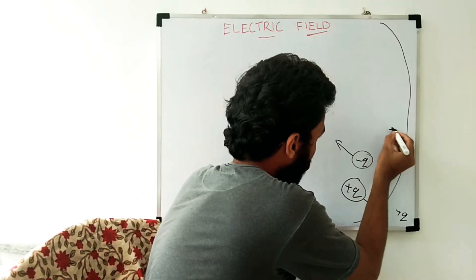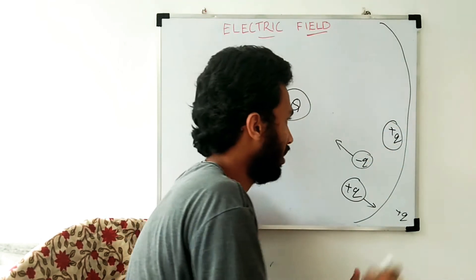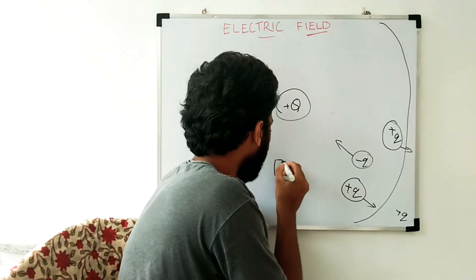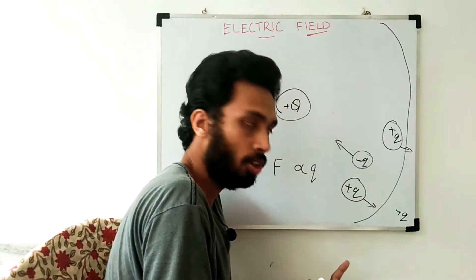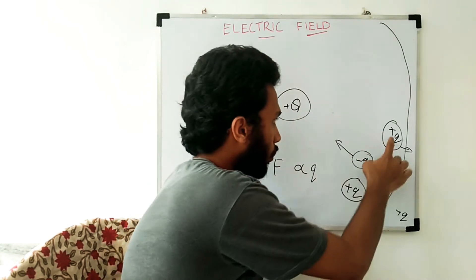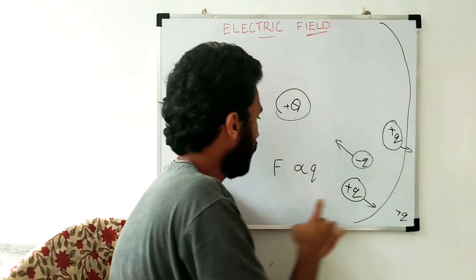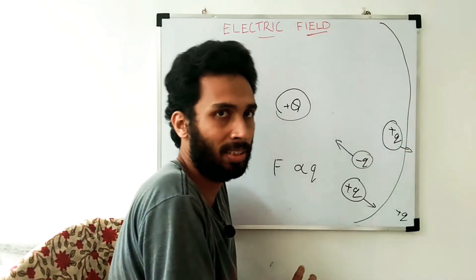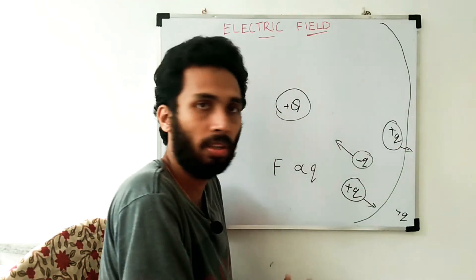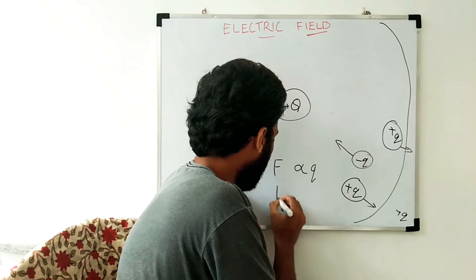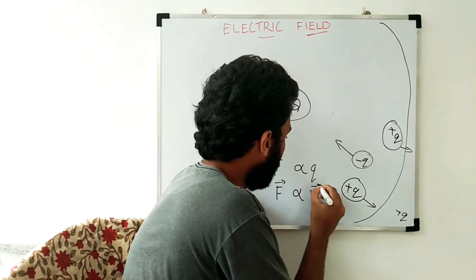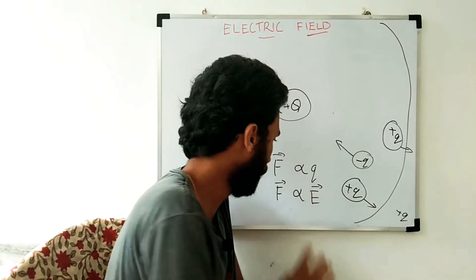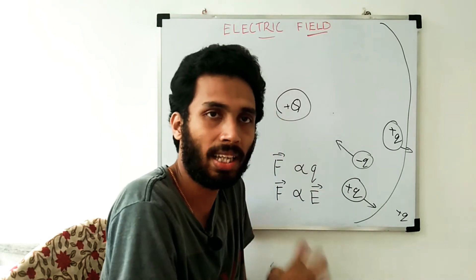I have a positive charge at this point. I will show you a positive charge experiencing a force in this direction. If you have a negative charge, it is directly proportional to Q. F is directly proportional to the electric field. The electric field is a vector quantity. It is not a scalar quantity — direction is dependent.